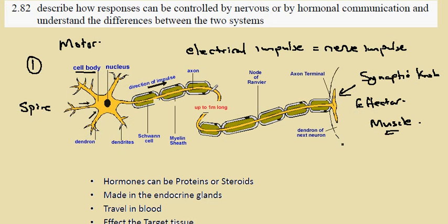The impulse travels down the structure, and these can be up to a meter long. This is a single cell shown in orange here, and the long structure is known as the axon.